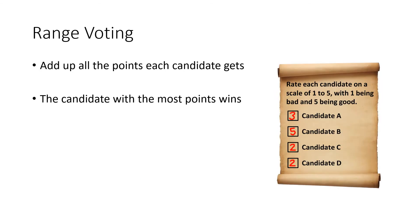Now let's talk about range voting. With a range ballot, we put a rating next to each candidate — in this example on a scale from one to five, though it could be one to ten or any other scale. We add up the points for each candidate and the candidate with the most points wins.